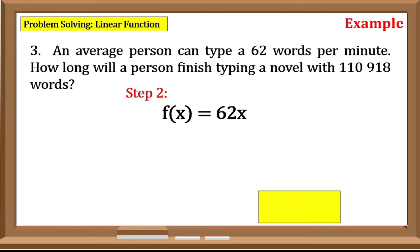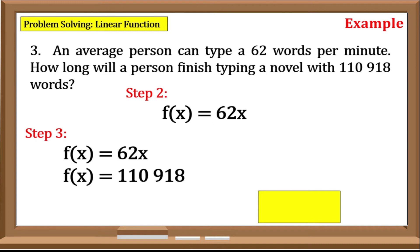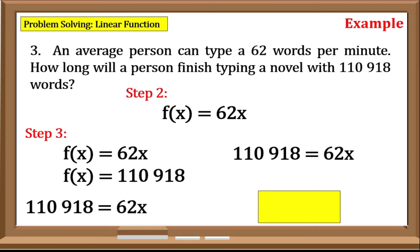Step 3: Evaluate the generated function. We have f(x) = 62x. Since our f(x), or our dependent variable, was given which is equal to 110,918, we need to evaluate the given value of our dependent variable. We have 110,918 = 62x. Simplify: we need to eliminate the 62 to solve for x using the division property of equality. We have 62x divided by 62, and 110,918 divided by 62, that is equal to 179.